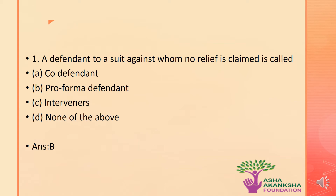The first question: a defendant to a suit against whom no relief is claimed is called what? The options are: a) co-defendant, b) pro forma defendant, c) intervenors, or d) none of the above. The correct answer is option B — a defendant to a suit against whom no relief is claimed is called a pro forma defendant.